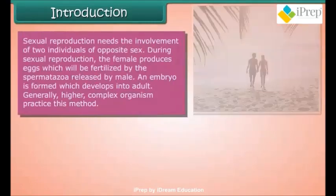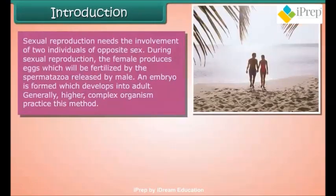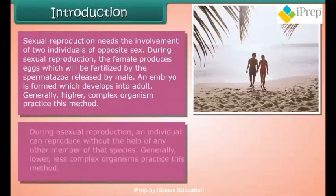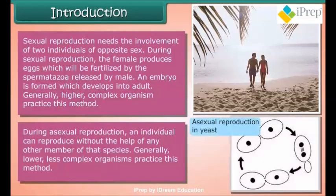Sexual reproduction needs the involvement of two individuals of opposite sex. During sexual reproduction, the female produces eggs which will be fertilized by the spermatozoa released by the male. An embryo is formed which develops into an adult. Generally, higher and more complex organisms practice this method.